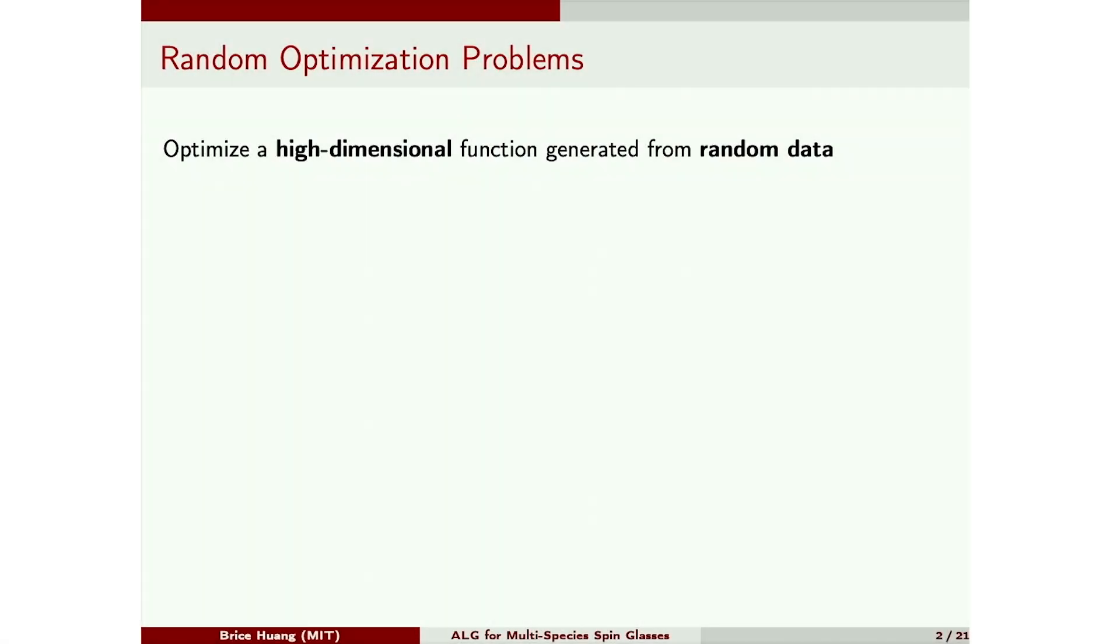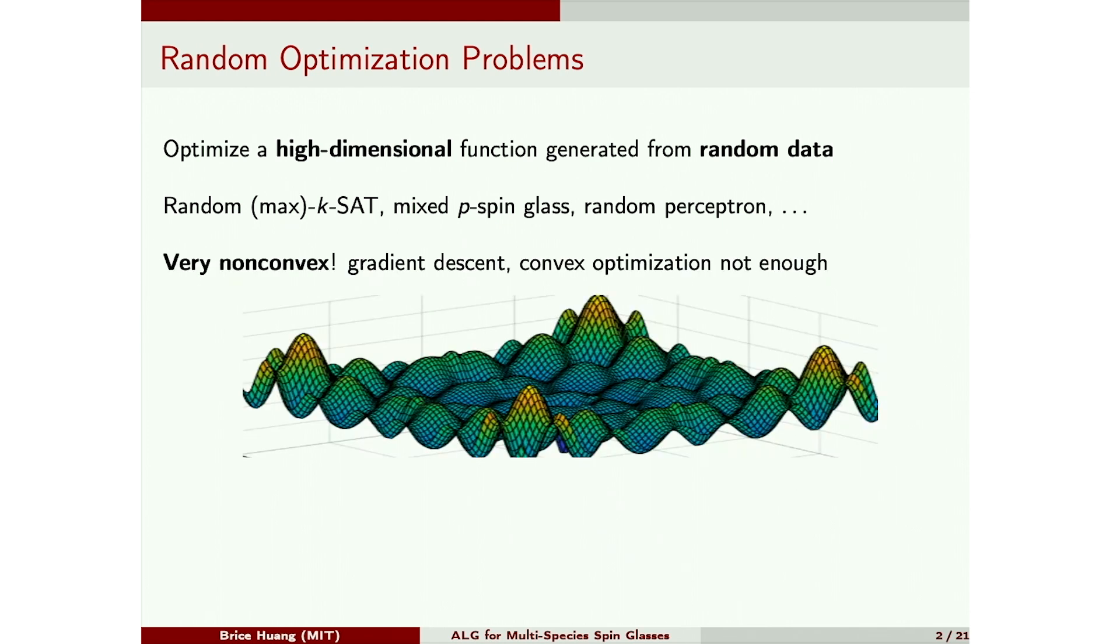These are high-dimensional optimization problems where the objective comes from random data. This includes constraint satisfaction problems like random k-SAT, as well as more mean field models like the mixed p-spin glass. These problems are often challenging from both perspectives of designing good algorithms and showing good hardness results. On the algorithmic side, the challenge is that the landscapes are often very non-convex. This suggests that algorithms like gradient descent won't be enough. On the hardness side, classical techniques like NP-hardness reductions are often overly pessimistic because they tend to capture the worst-case behavior of these problems, which might not be representative of the average case.